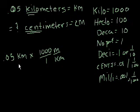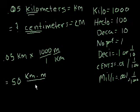And what does that get? Well, 0.05 times 1,000 is equal to 50, right? I just multiplied 0.05 times 1,000. And with the units, I now have kilometers times meters over kilometers. And the kilometers cancel out.